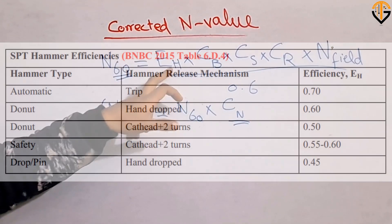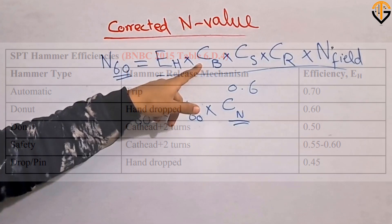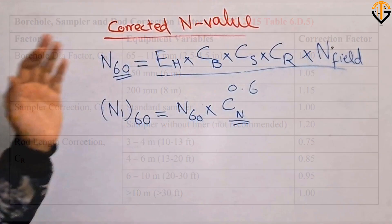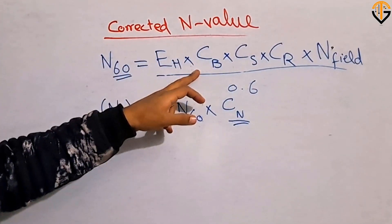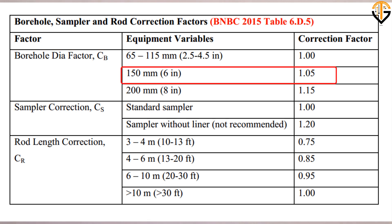E_H can be found from Table 1, and C_B, the correction for borehole, can also be found using Table 1 shown on screen. The table shows borehole correction values for different borehole sizes. If the borehole diameter is 2.5 to 4.5 inches, the correction is 1, meaning no correction is required. If the borehole size is 6 inches, the correction is 1.05; if it is 8 inches, the correction is 1.15.